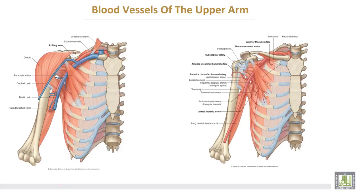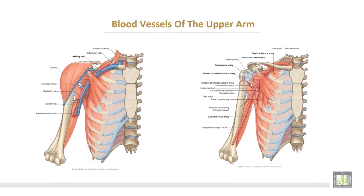This is the brachial artery, which is the continuation of the axillary artery, starting at the lower border of the teres major muscle.